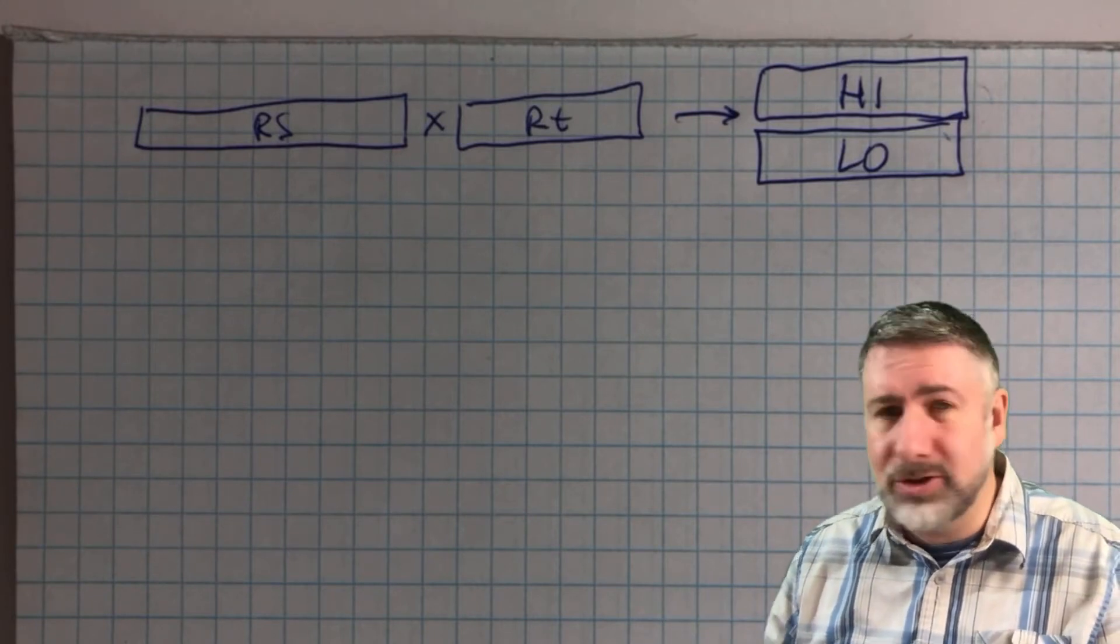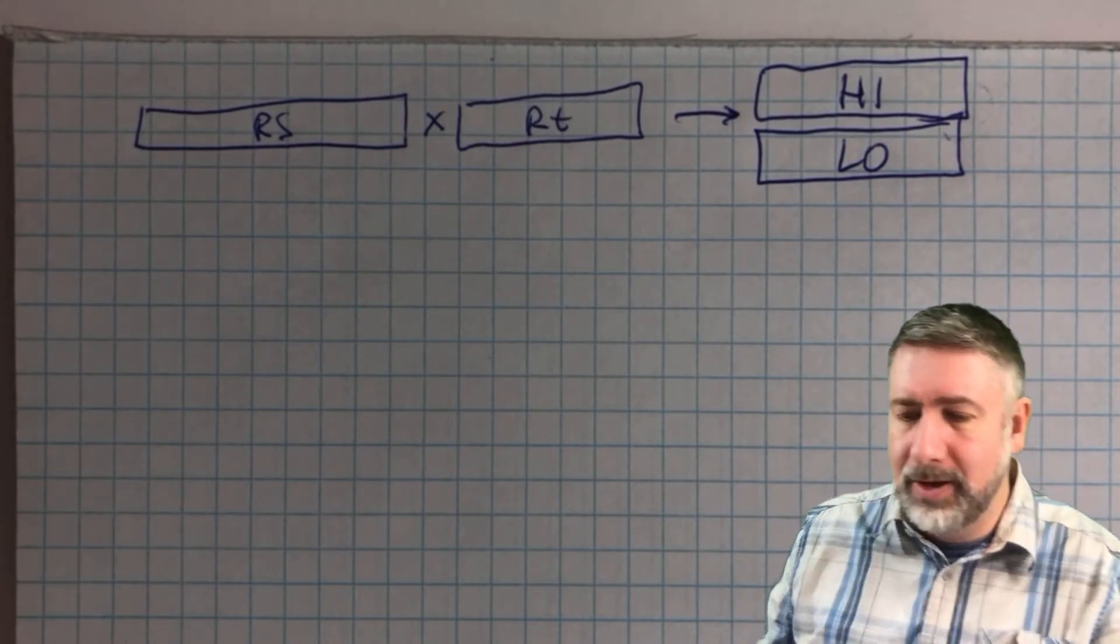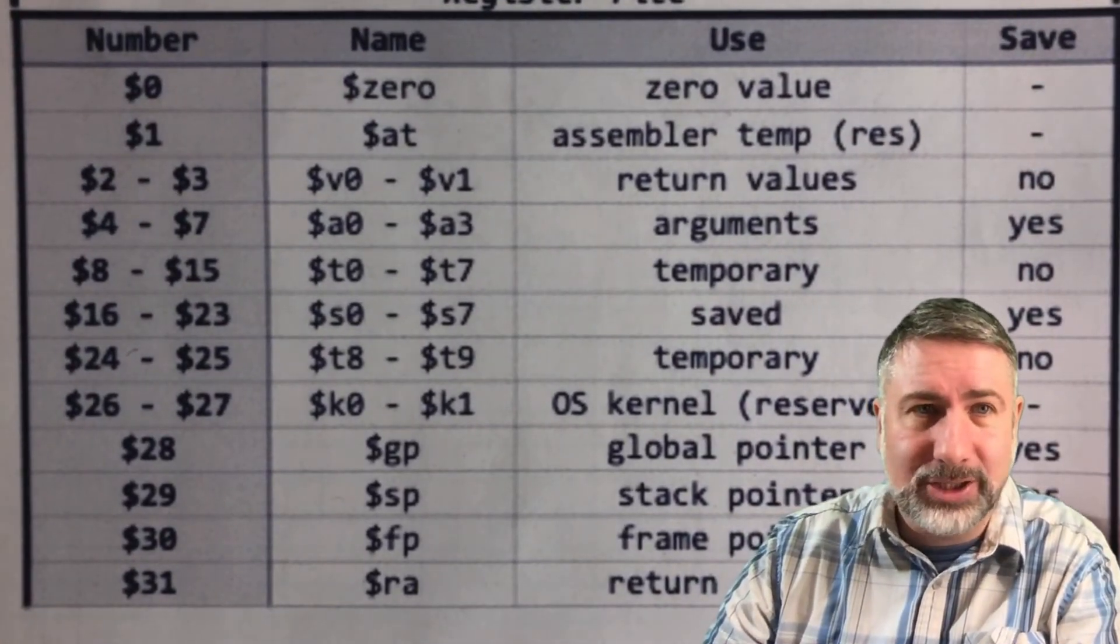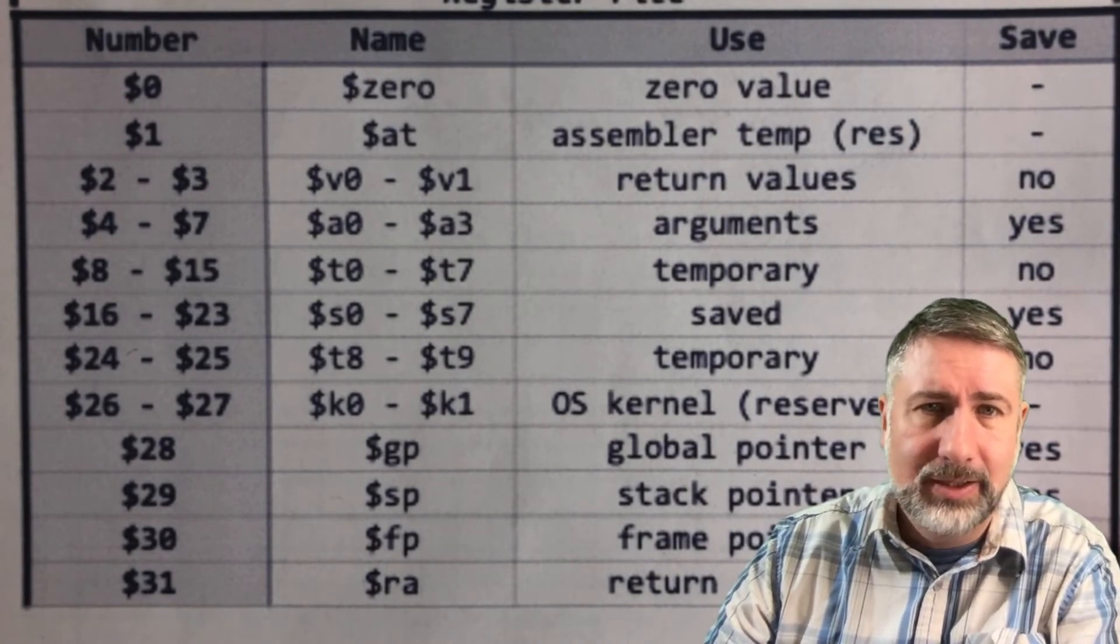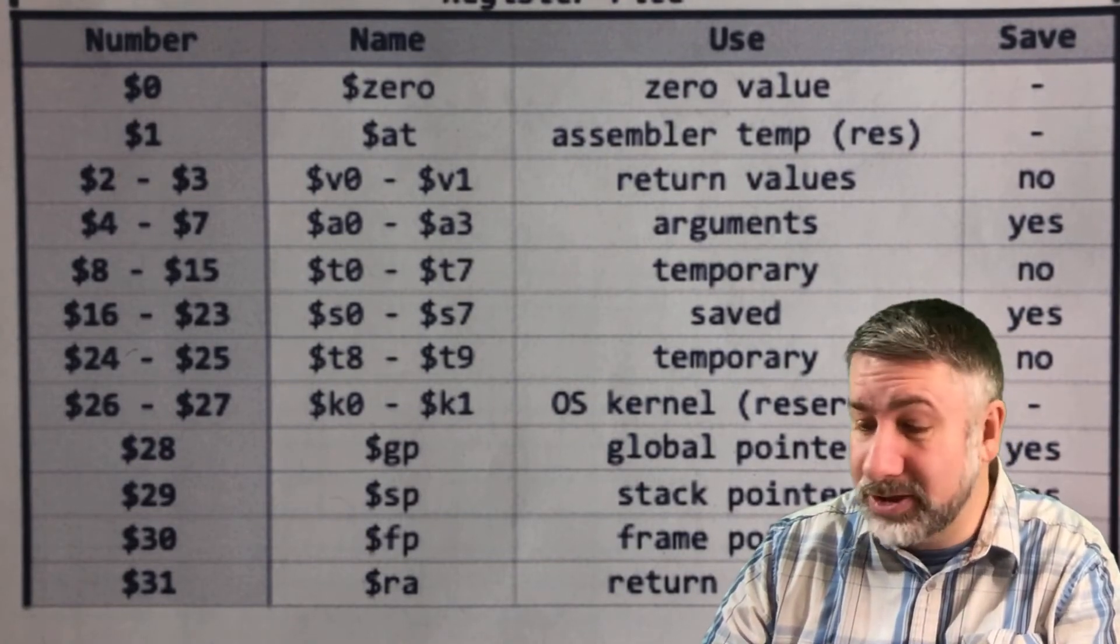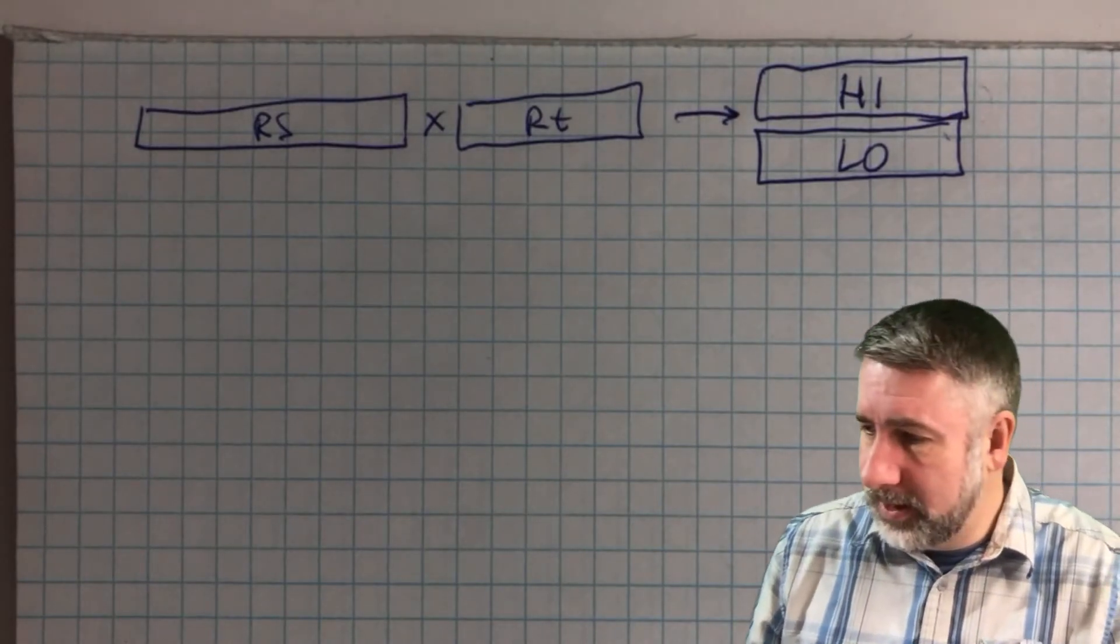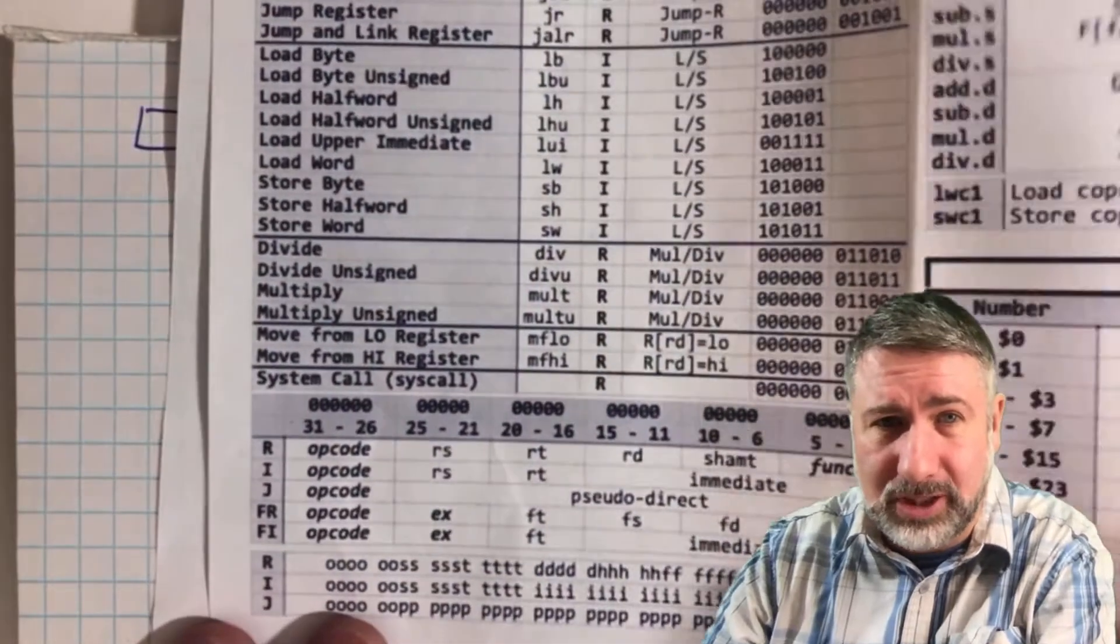Also, you could take the result from the high register just to check and say, if that result is not zero, then we have an error because we can't deal with 64-bit numbers. It's just too big. But we still need to be able to put that result in, in case we want to write some code to deal with it. But what do we do with that? These are not registers that are in our register file, right? Our register file doesn't have high and low in it. It's got zero, A, T, V, A, T, S, T, and then all OS kernel reserved registers and then a few stack pointers and stuff, but no registers called high and low.